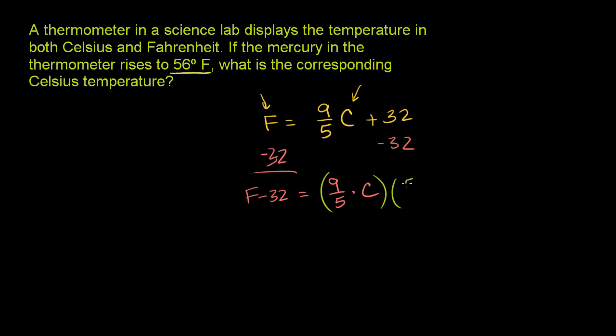Multiply both sides of this equation times 5 over 9. And so we will get 9 cancels with 9, 5 cancels with 5. That was the whole point behind multiplying by the reciprocal. And so we are left with, remember, this 5 ninths is going to be times this whole left side. We are left with Celsius. Celsius is equal to 5 ninths times Fahrenheit minus 32.